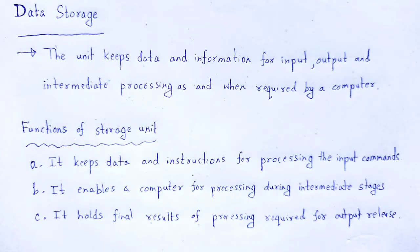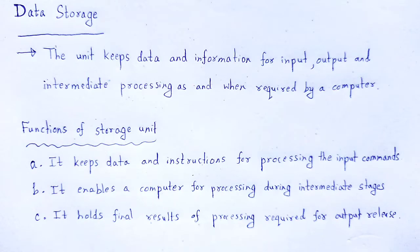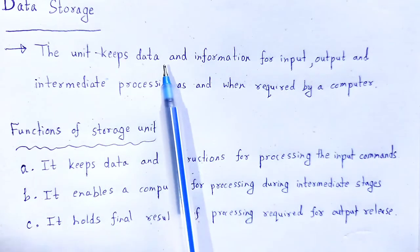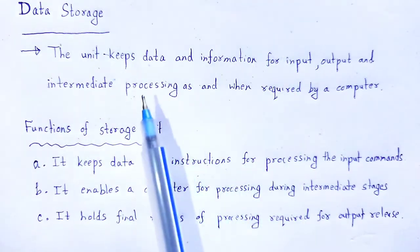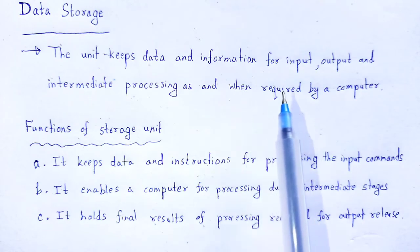In a computer, the basic functions are inputting, storing, processing, outputting, and controlling. So in case of processing, the data or information must be stored. To store this data and instructions, there will be a requirement of data storage units. Data storage is the unit that keeps data and information for input, output, and intermediate processing as and when required by a computer.